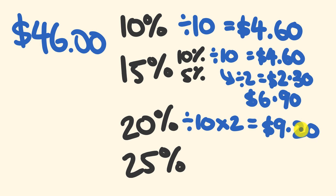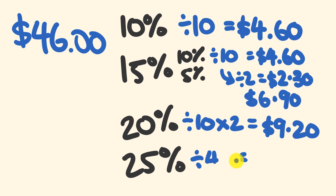Finally, for a 25% tip — twenty-five percent is literally one quarter. So we just take our $46 and divide by four. Forty-six divided by four equals $11.50. Easy — that's your 25% tip.